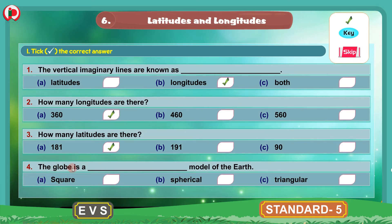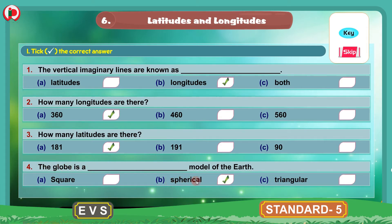Question 4: The globe is a dash model of the earth. The options are A. Square, B. Spherical, C. Triangular. The correct answer is option B, Spherical. We will put the tick mark here for option B. The globe is a spherical model of the earth.